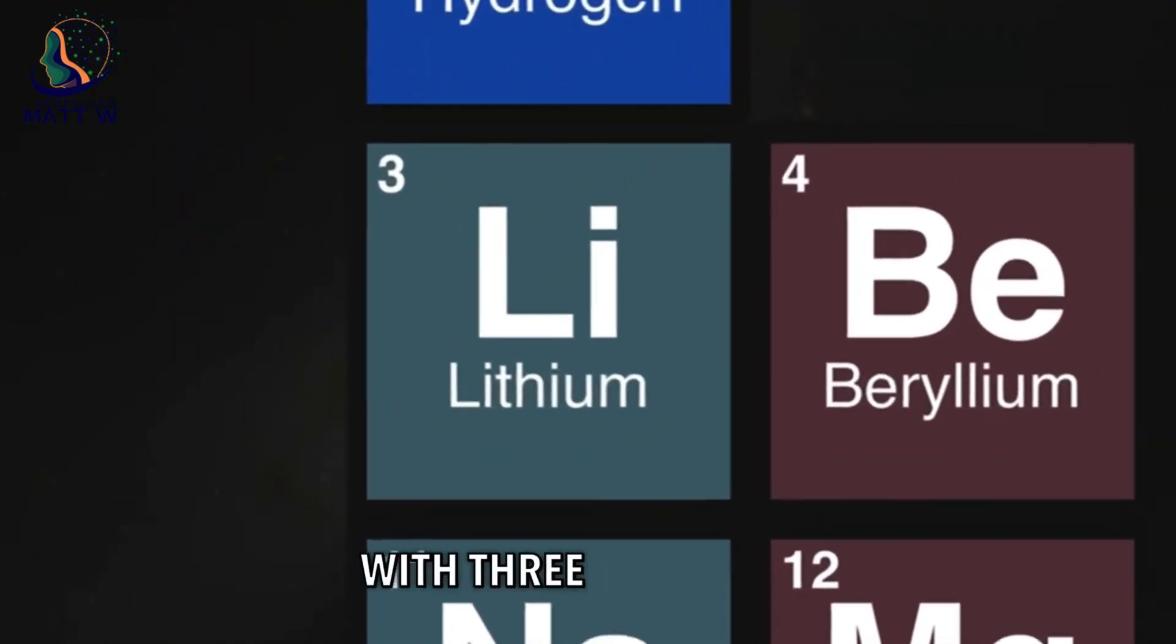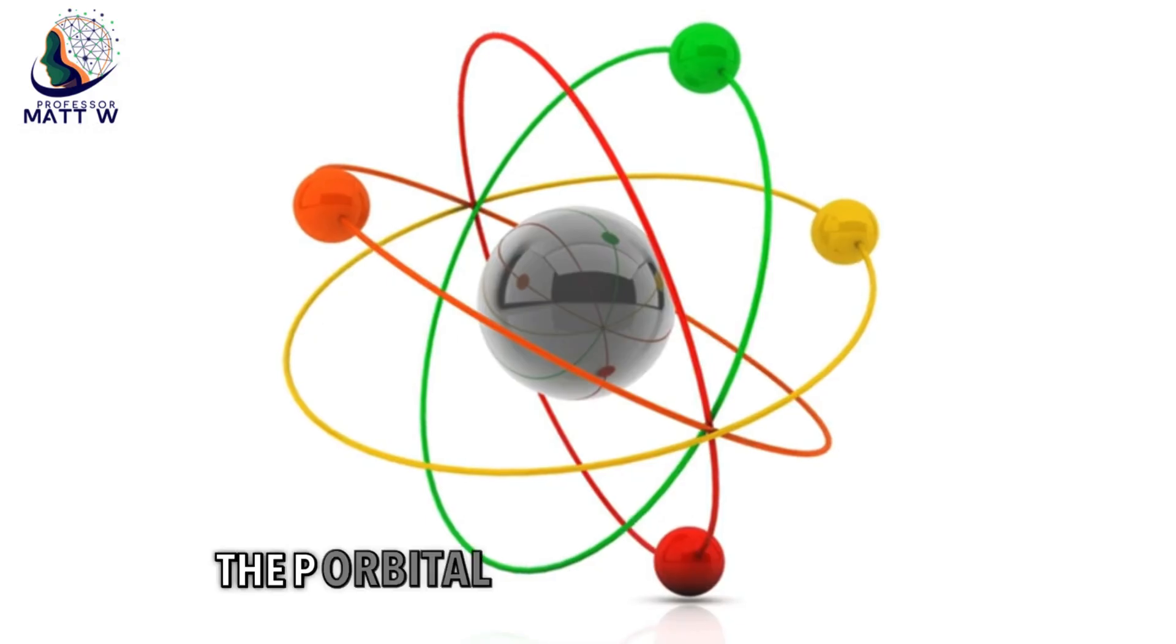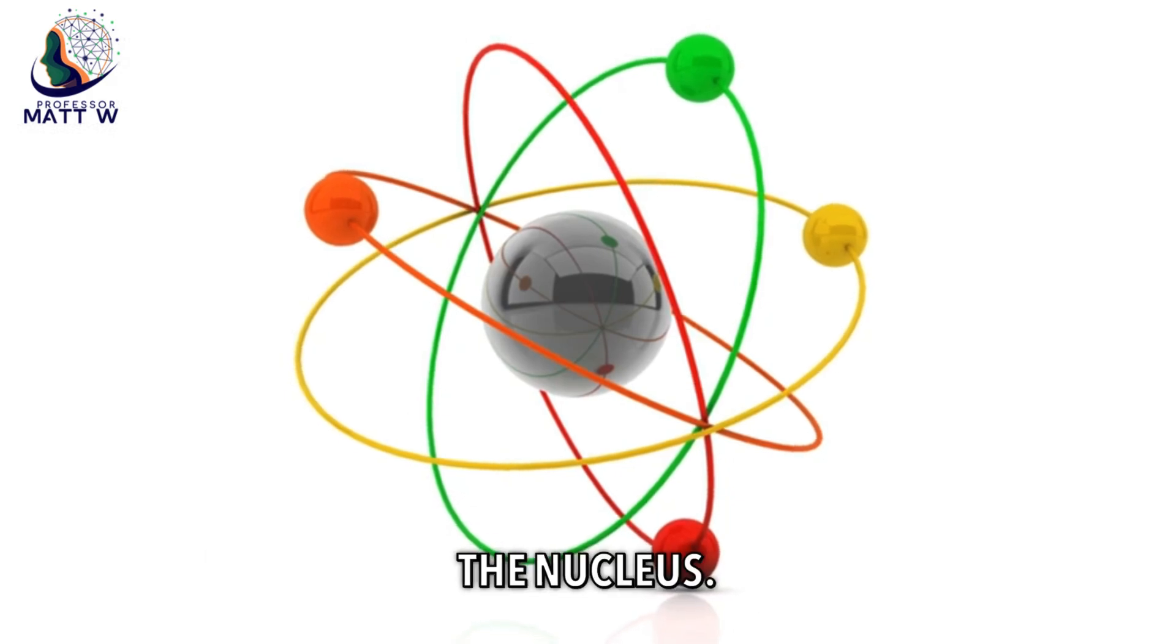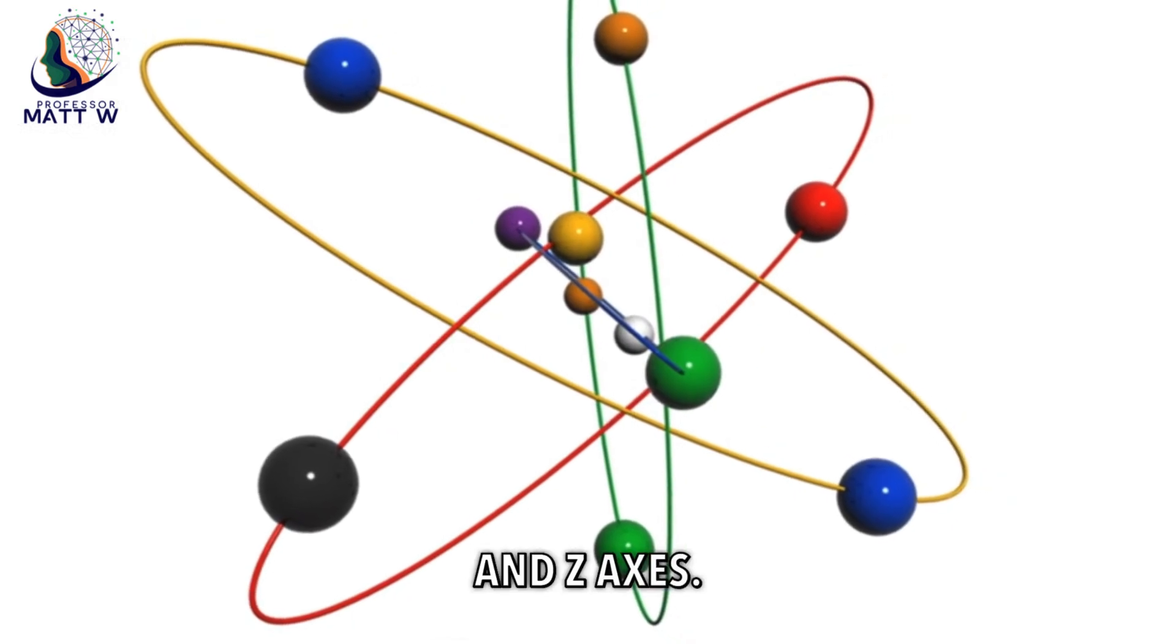Lithium, with three electrons, introduces us to the p orbital. The p orbital has a dumbbell shape, with two lobes on opposite sides of the nucleus. There are three p orbitals, oriented along the x, y, and z axes.